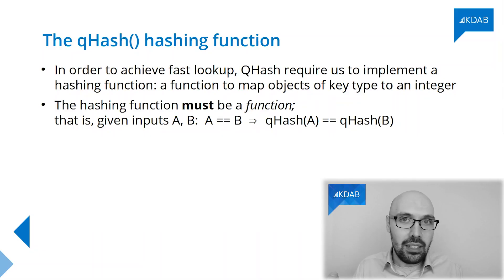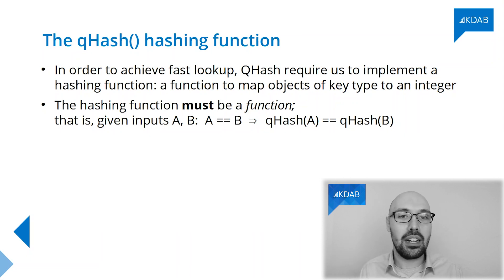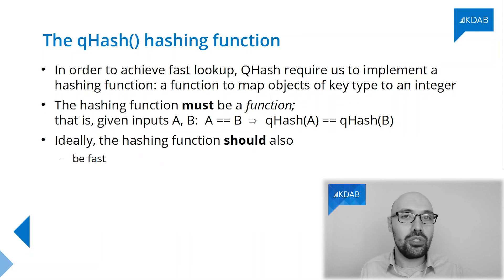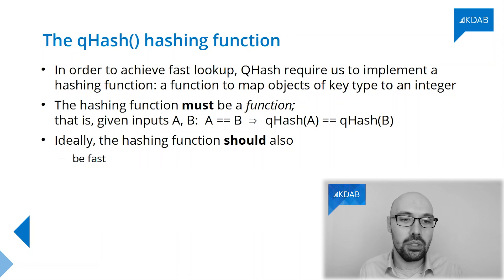On top of that, although it's not strictly required, it would be very nice if your hashing function had some extra properties. It should be fast — that goes without saying, because the whole point of this exercise is to make fast lookups, and if your hashing function is terribly slow, that's not going to be good.